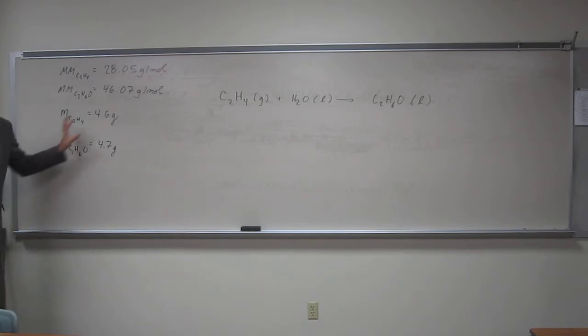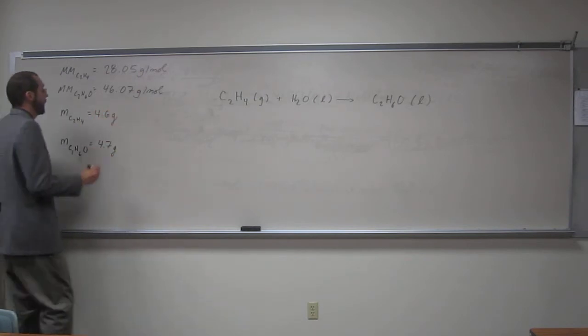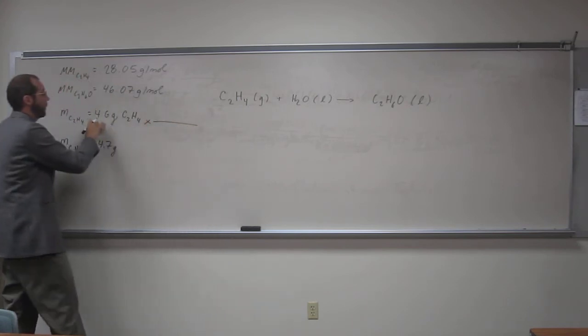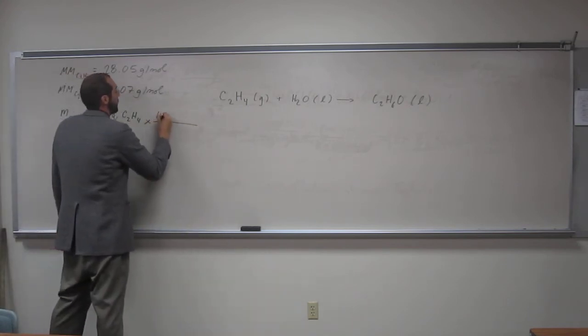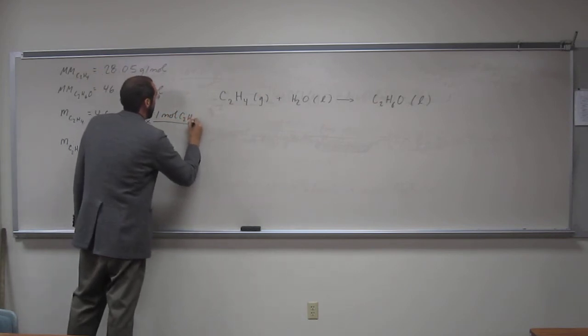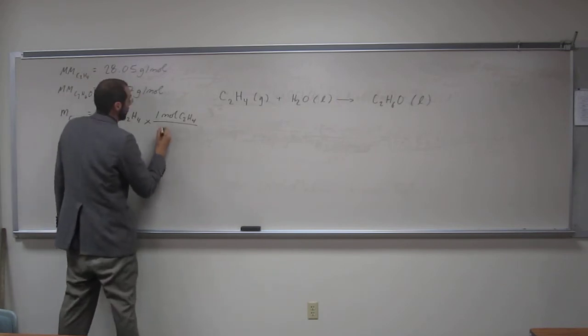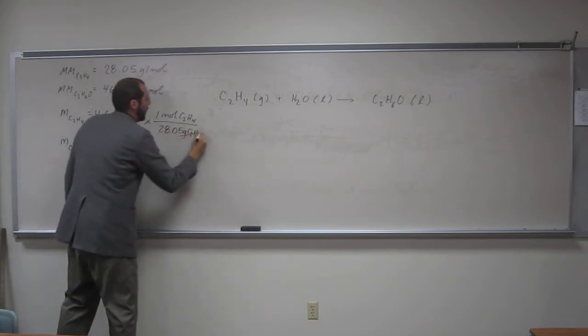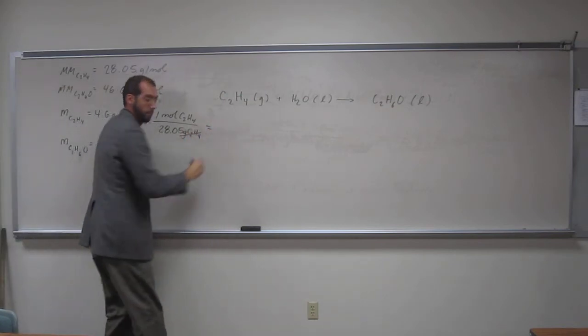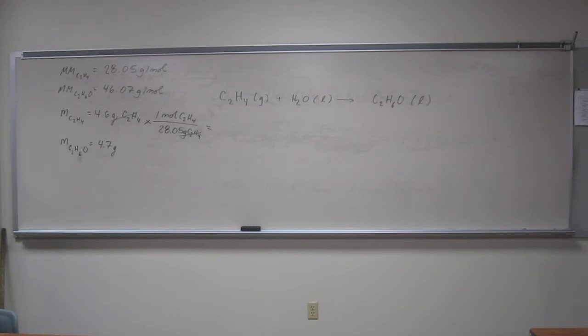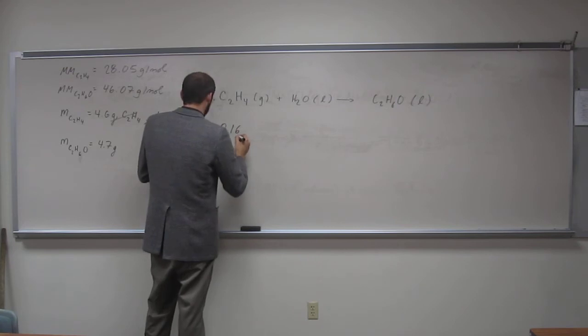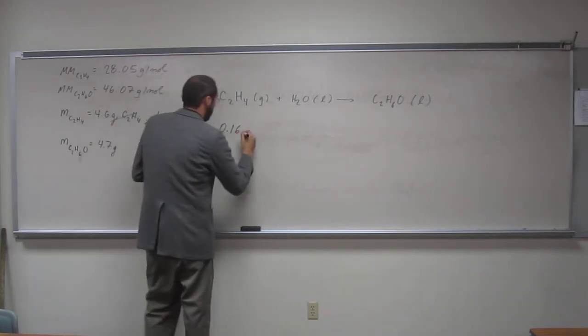The next step is to convert each of these to the number of moles. Let's put the actual substance. So, 4.6 grams of ethylene, and we want moles of ethylene. 4.6 divided by 28.05, so 0.16 moles.